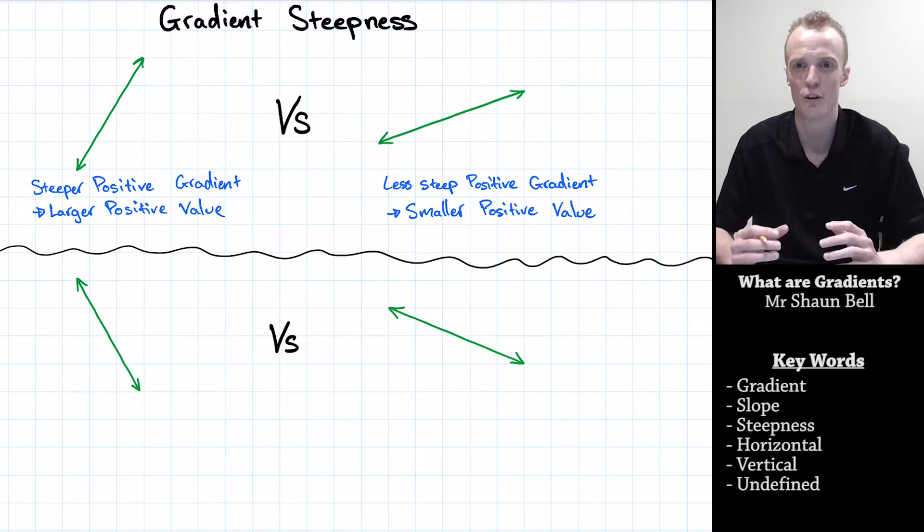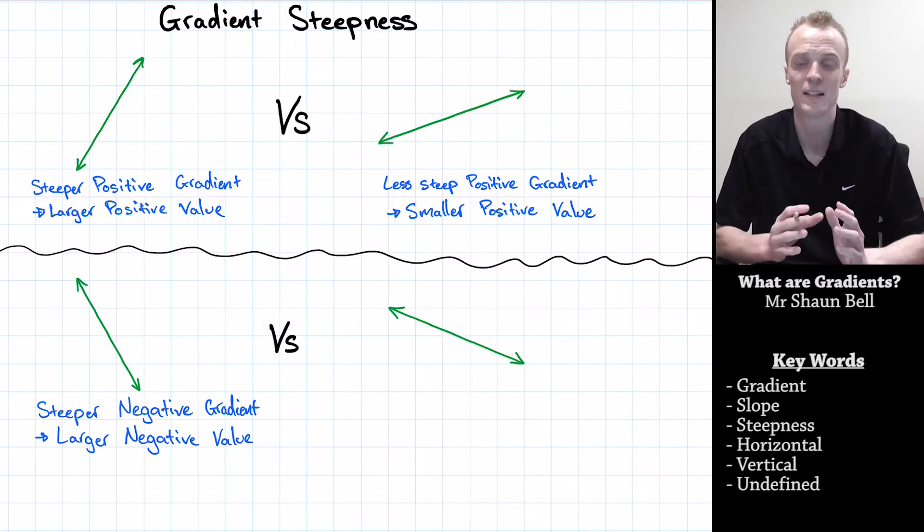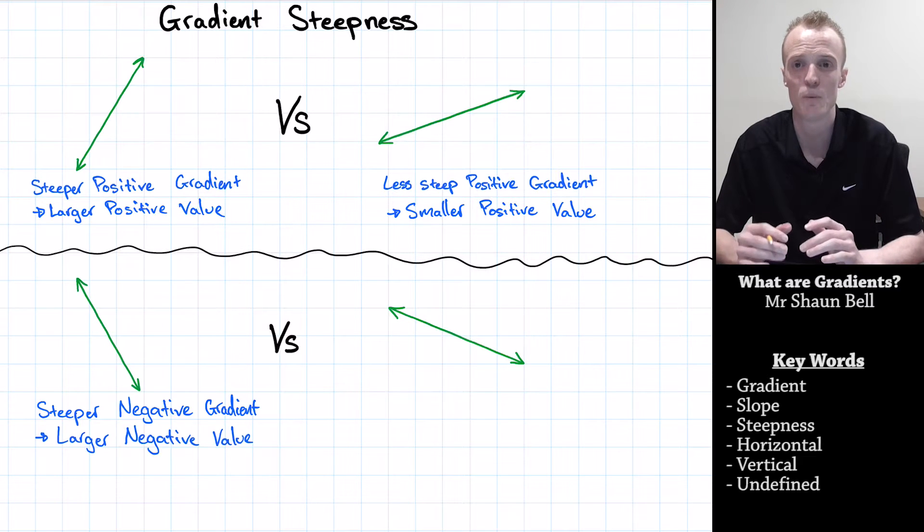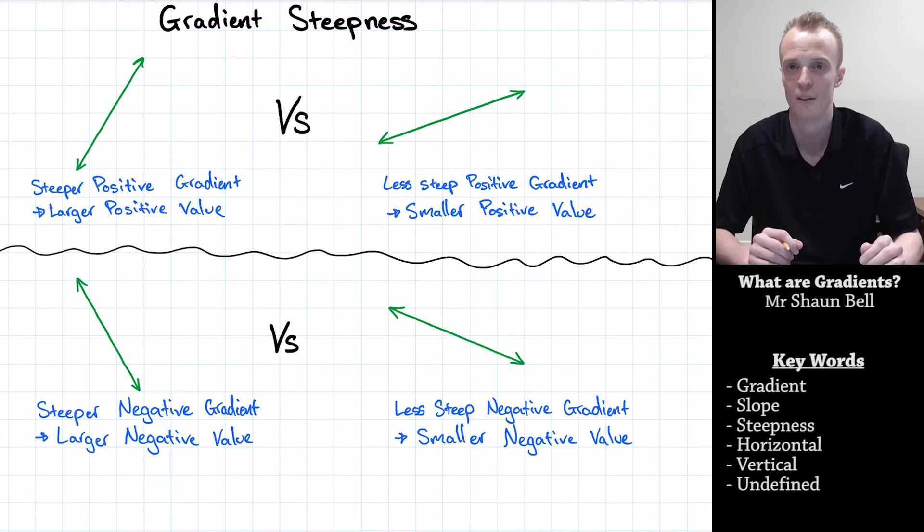The same can be held true for negative gradients. In the bottom left hand corner here, we've got a negative gradient that's steeper than the negative gradient to the right of it. We use a larger negative value to describe that steeper negative gradient. On the bottom right, because it's going down as we go left to right, it's still a negative gradient, but it's not as steep as what we had in the bottom left. When the negative gradient is less steep, it's still going to be a negative value, but it's going to be a smaller negative value.